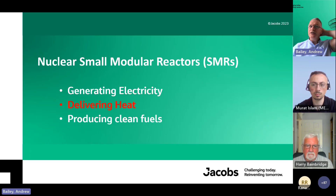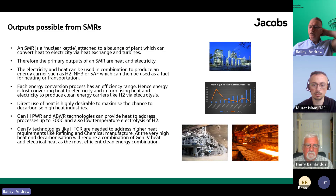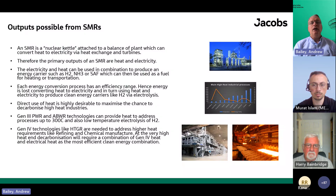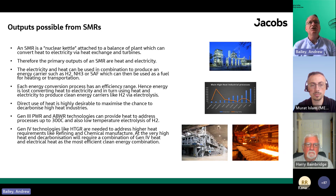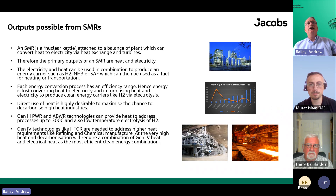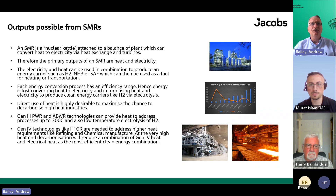In very simple terms, a small modular reactor is a nuclear kettle — it's attached to a balance-of-plant which converts the heat to electricity via heat exchange and turbines. The primary outputs of an SMR are heat and electricity, and we should always bear that in mind. The electricity and heat can then be used in combination to produce an energy carrier such as hydrogen, ammonia or synthetic aviation fuel.